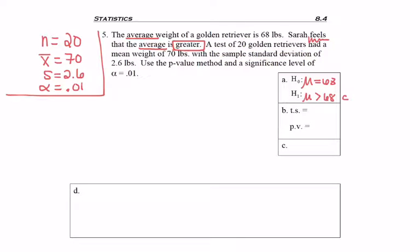So this means that when I go to find my test statistic, I'm going to be finding a T test statistic. I start by taking my sample average of 70, subtract the population average, which in the null hypothesis is listed to 68, and divide by the sample standard deviation over the square root of the sample size.